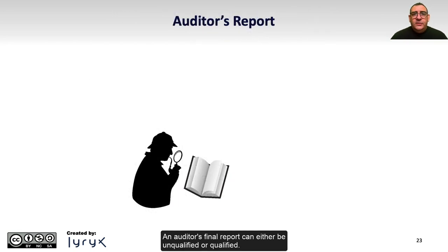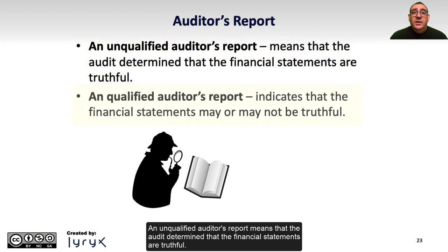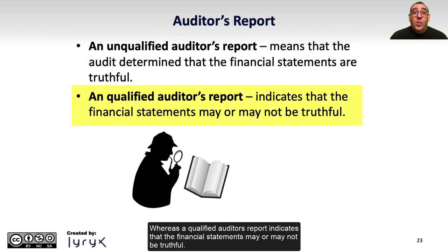An auditor's final report can either be unqualified or qualified. An unqualified auditor's report means that the audit determined that the financial statements are truthful, whereas a qualified auditor's report indicates that the financial statements may or may not be truthful.